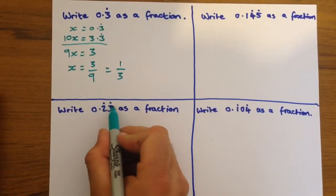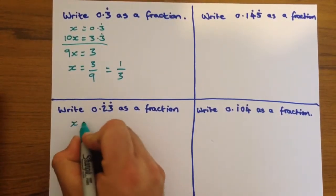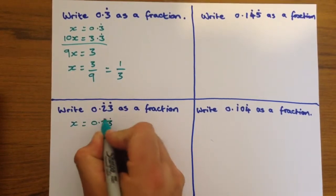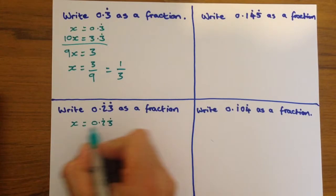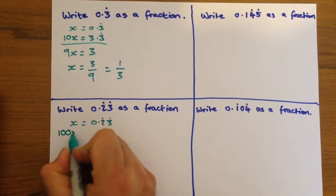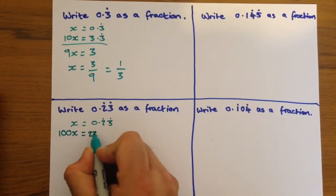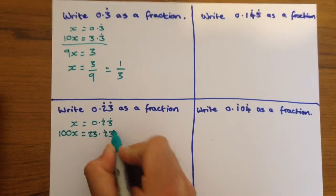Now, in this instance, you've got two numbers recurring, so x equals 0.23 recurring. We're going to multiply by 100 this time to move the decimal point two places, so 100x equals 23.23 recurring.